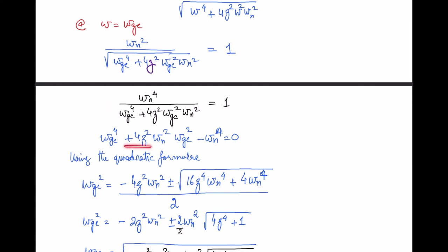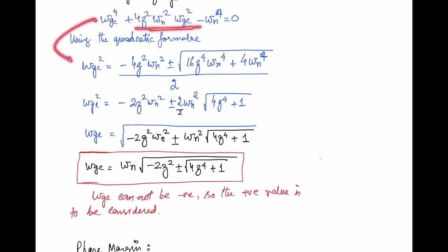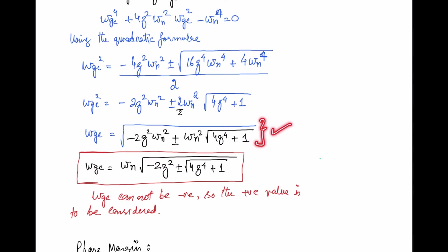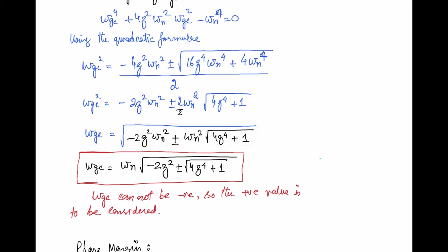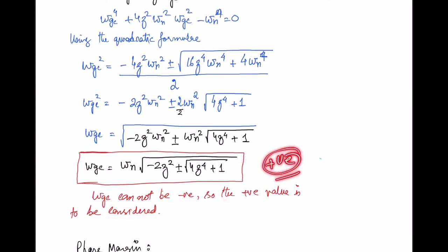Using the quadratic formula to solve the resulting equation, we find the square of the gain crossover frequency. Taking the square root on both sides, the gain crossover frequency is ωgc = ωn · √(√(4ζ⁴ + 1) - 2ζ²). Since frequency cannot be negative, only the positive value is considered.